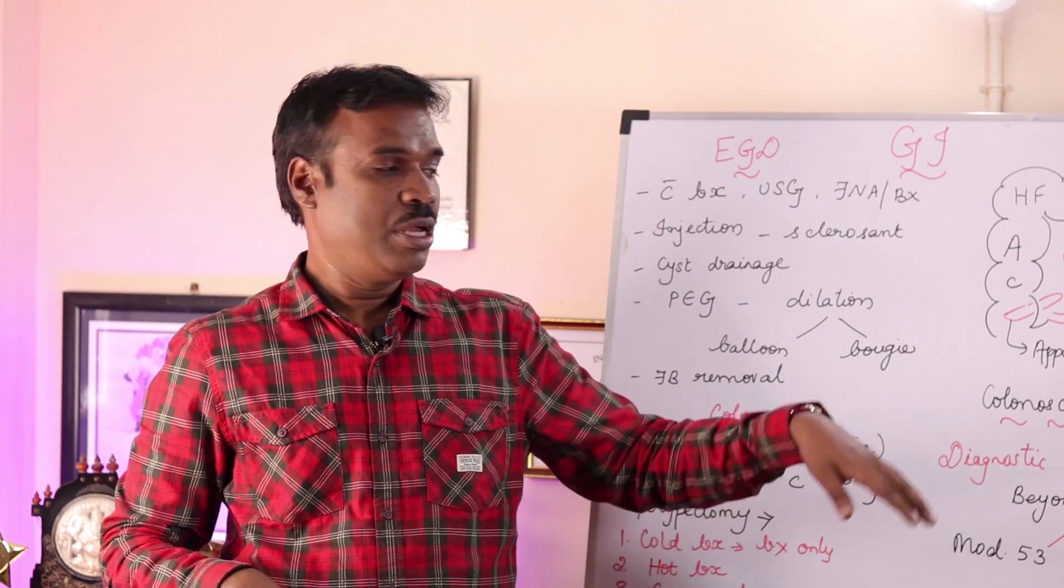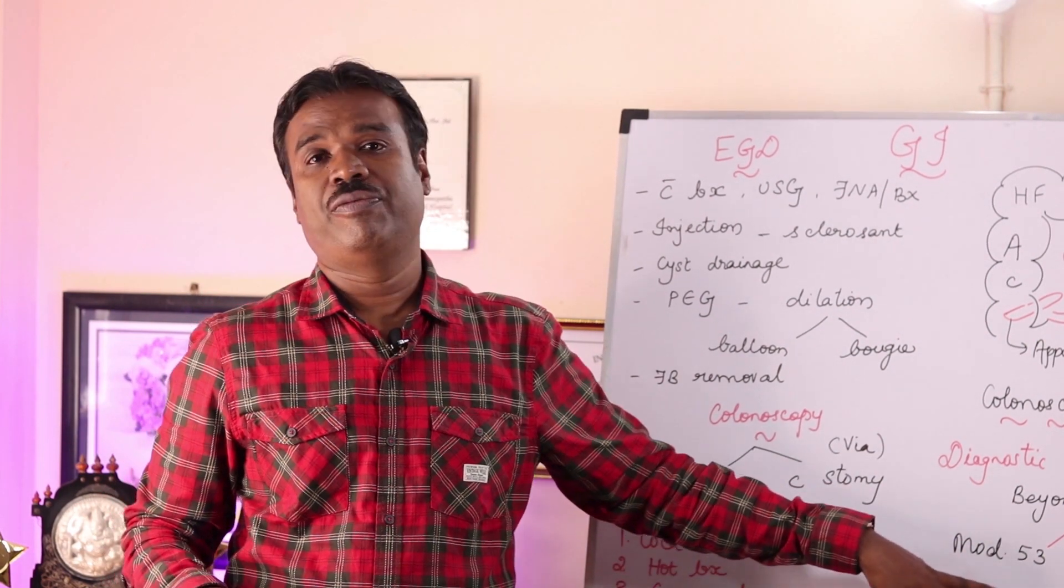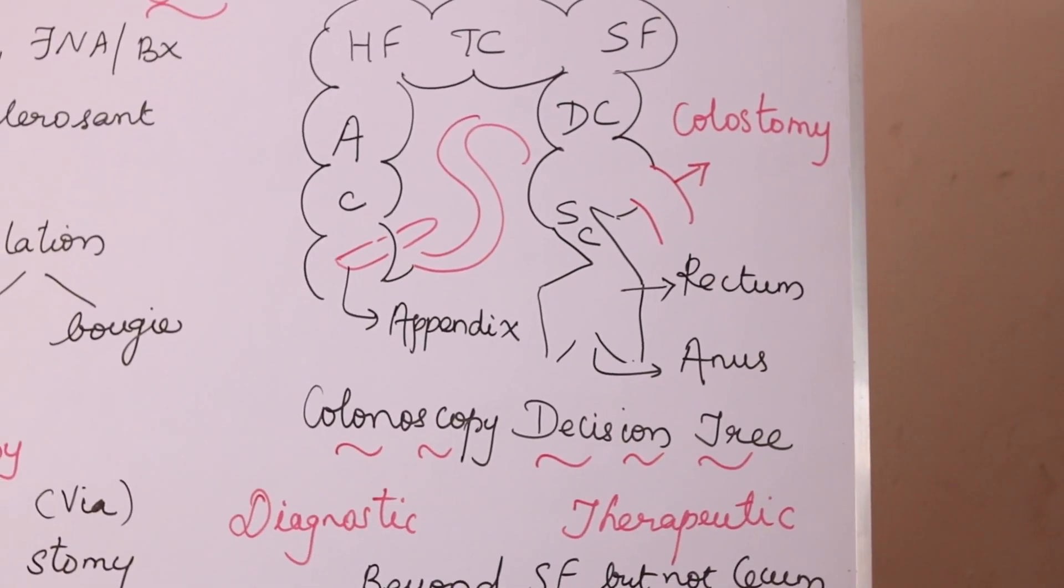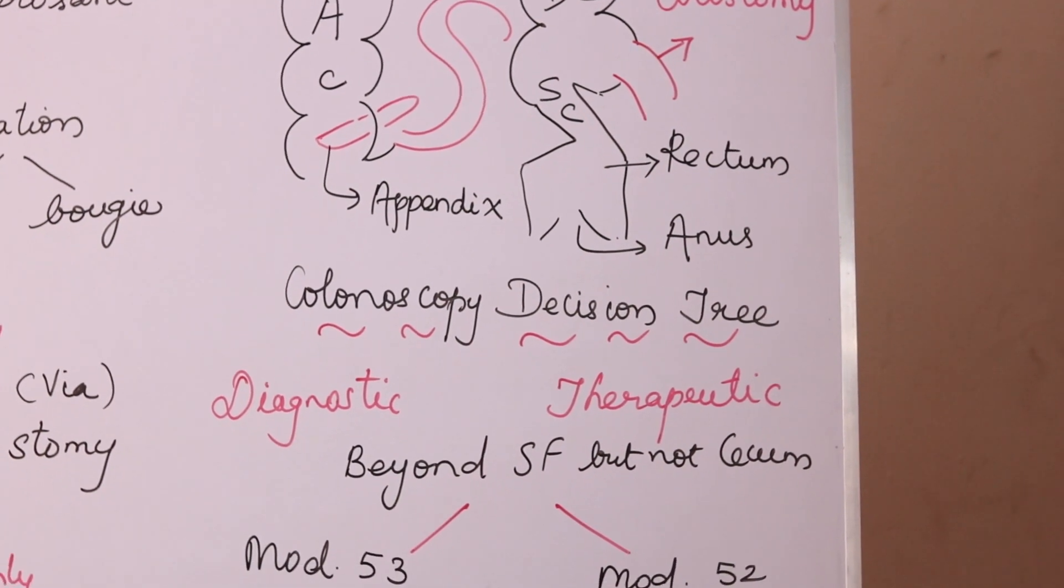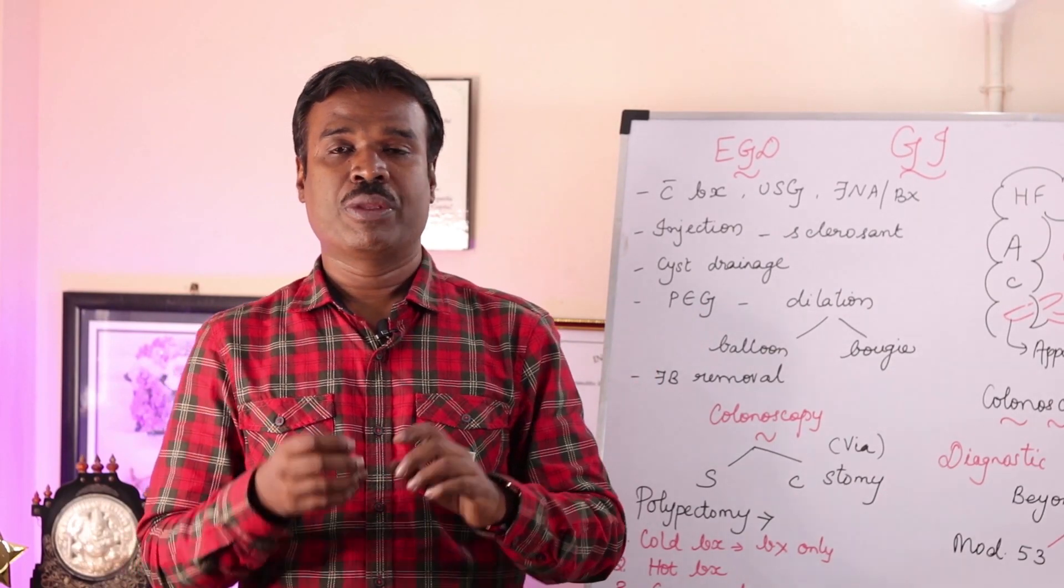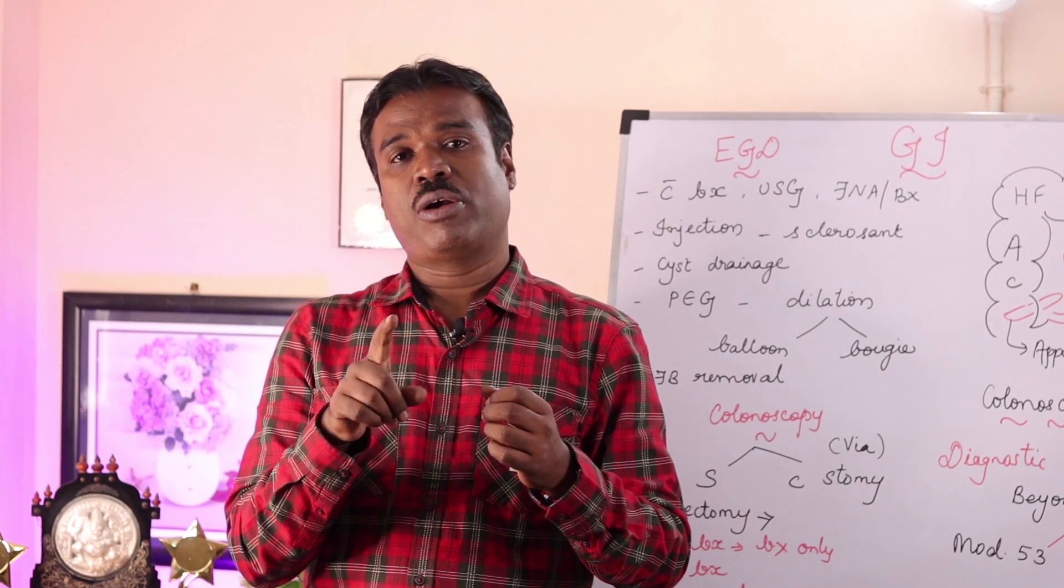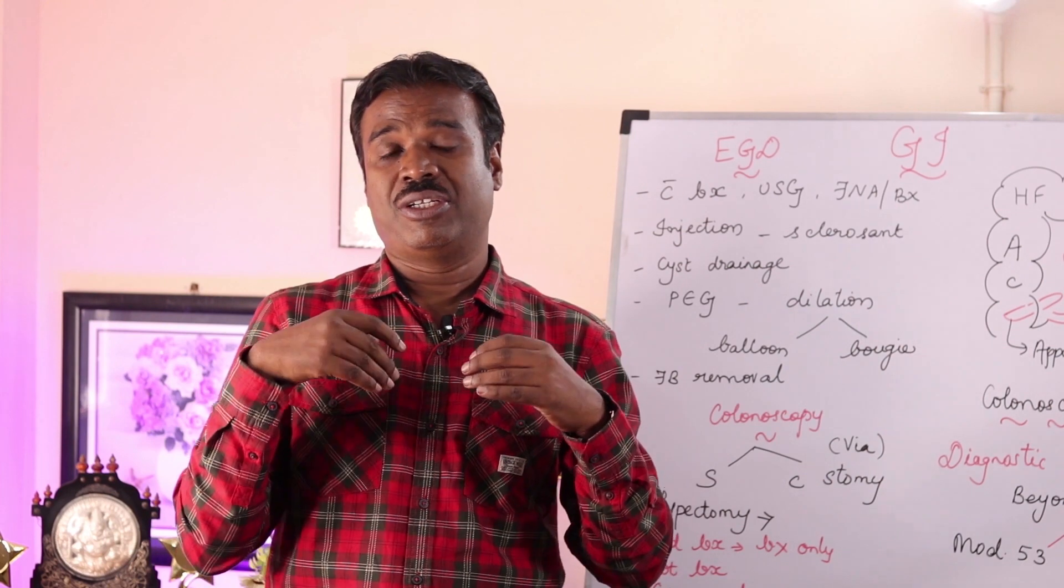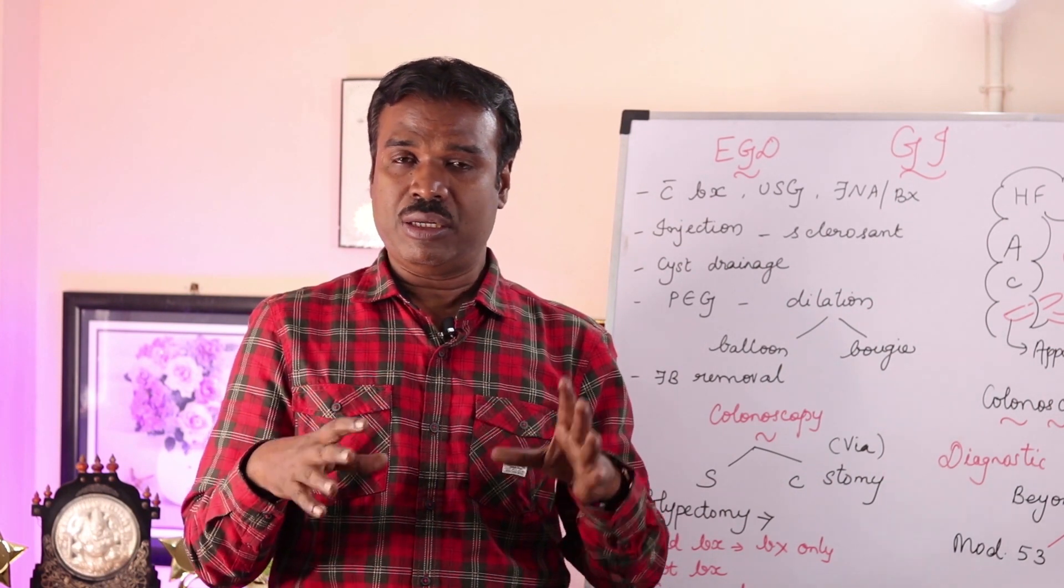In that case, you need to report with modifier 53 for a diagnostic colonoscopy, whereas you will have to report the modifier 52, which is a reduced service for a therapeutic colonoscopy. So please understand what is the nature of colonoscopy and until where the physician has entered the scope.